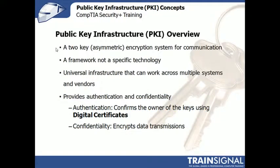PKI is a two-key encryption system. Having two keys — the word for that is asymmetric. It's important to note that PKI is a framework, like a guideline that different systems, vendors, and technologies can interpret and use to provide authentication and confidentiality in their data transmissions. So it's a set of rules, and one being that you have to have two keys.